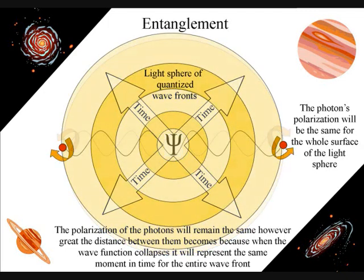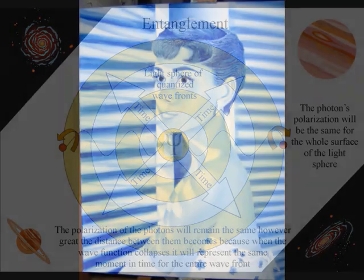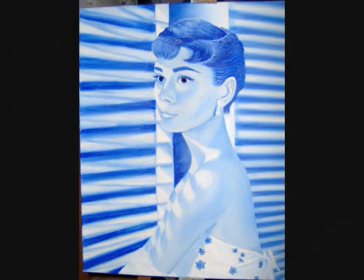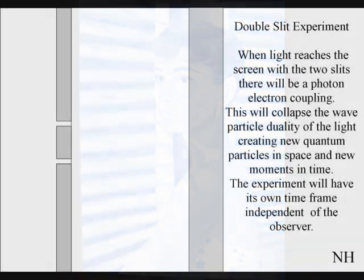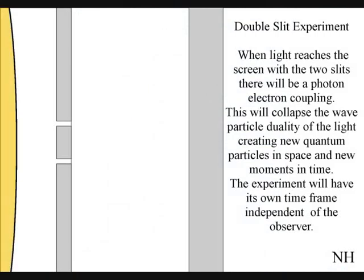In the double slit experiment, we can see light radiate out, striking objects, creating new moments of time. When the light reaches the screen with the two slits, the photon will react with the electrons of the screen.